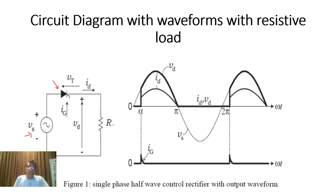Here it is mentioned resistive load only, but as per need we can test both for the resistive load as well as inductive load. Simply, this thyristor will behave like an on-switch if the gate pulse is given to it during forward blocking state, and it will behave like an off-switch if the gate pulse is not given to it during forward blocking state.